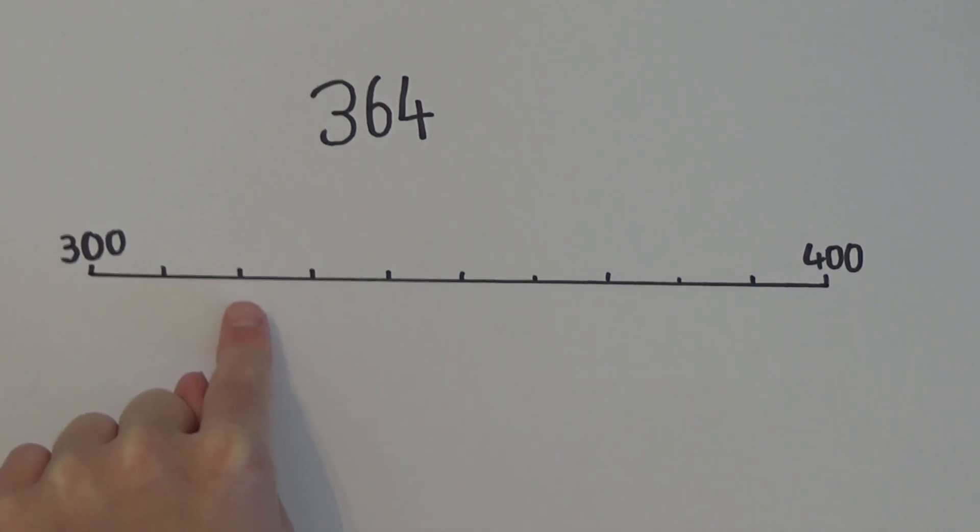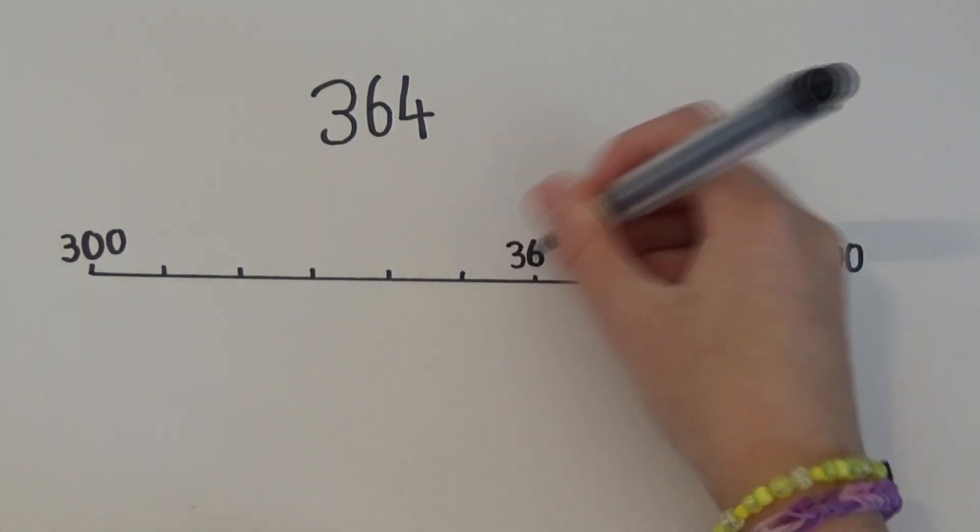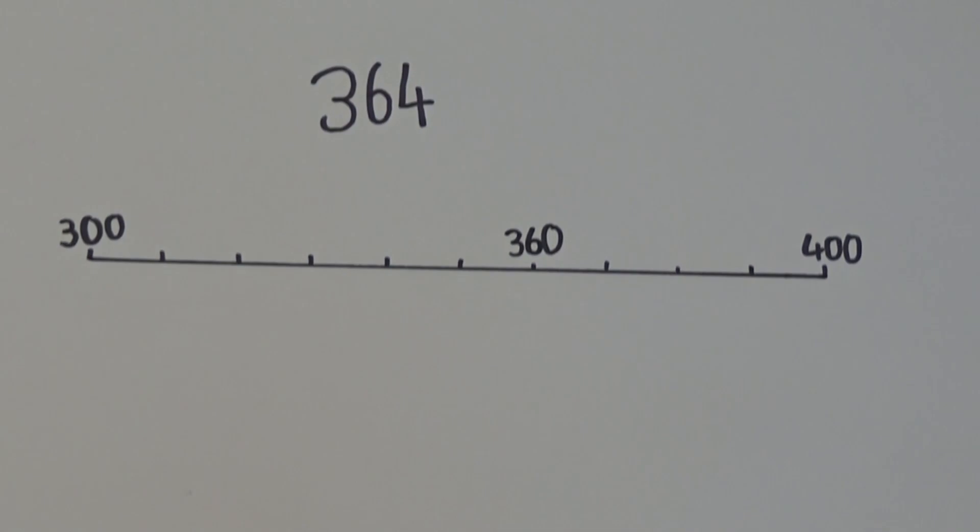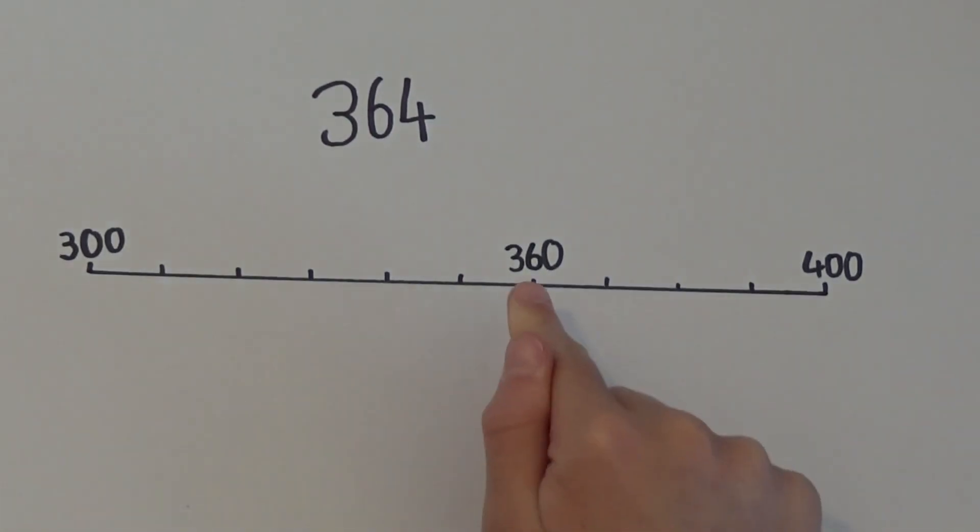310, 320, 330, 340, 350, 360. 364 is about here, so I'm going to write 364 on my number line.